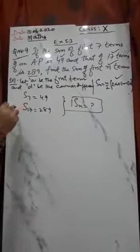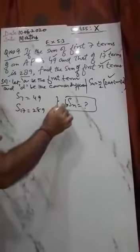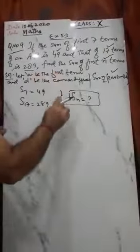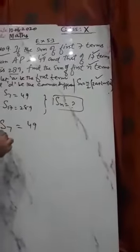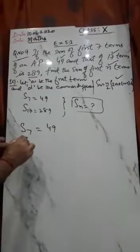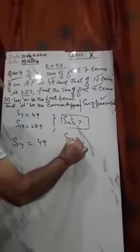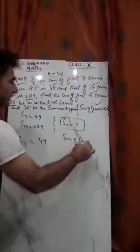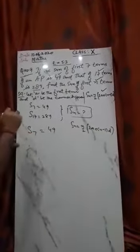Now, what is given: S7 = 49, S17 = 289, and we need to find the sum of first n terms. Let us start with the first one. Sum of first seven terms is 49. You can apply the formula with n equal to 7: S_n = n by 2 into [2a plus (n minus 1) into d], so n is replaced by 7.